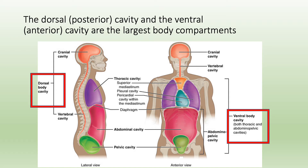The cavities are divided into two major groups according to their locations — they may be found in the front or back of the body. In a person standing in anatomical position, the ventral or anterior body cavities are found in the front, and the dorsal or posterior body cavities are on the backside of the body.